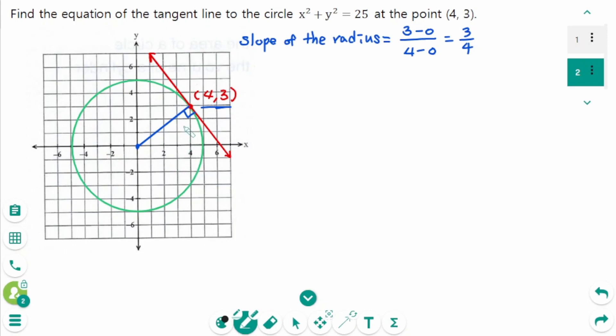Since the tangent and the radius are perpendicular to each other, the slope of the tangent is the negative reciprocal, so minus 4 over 3.